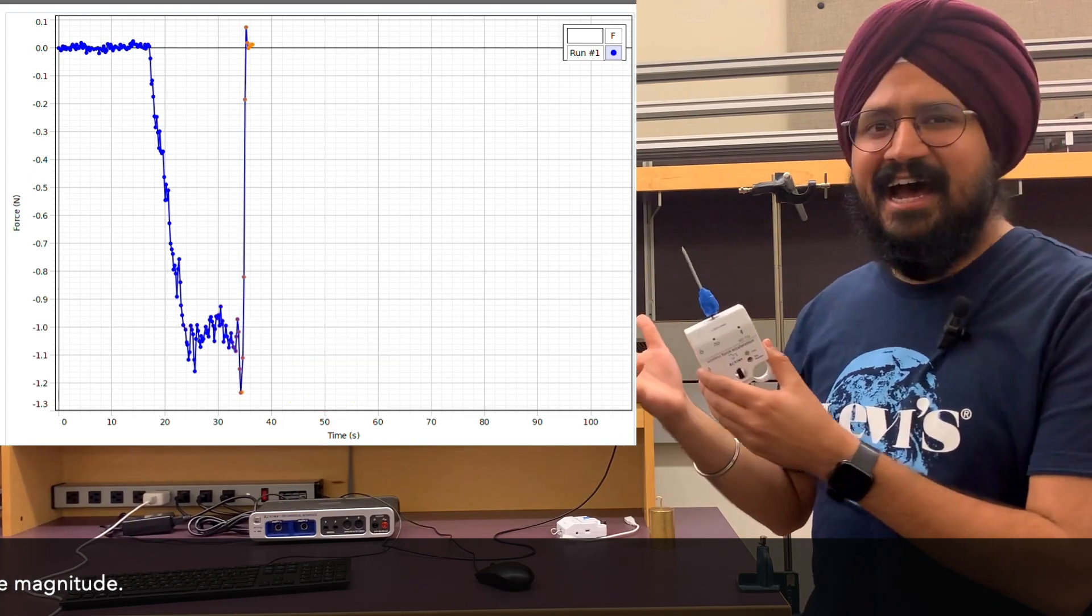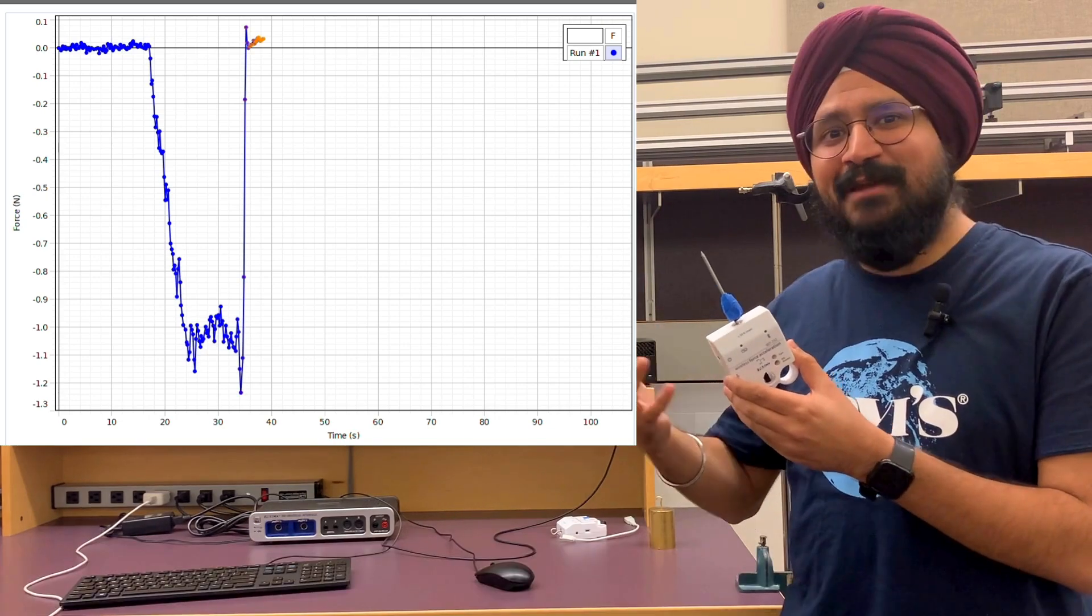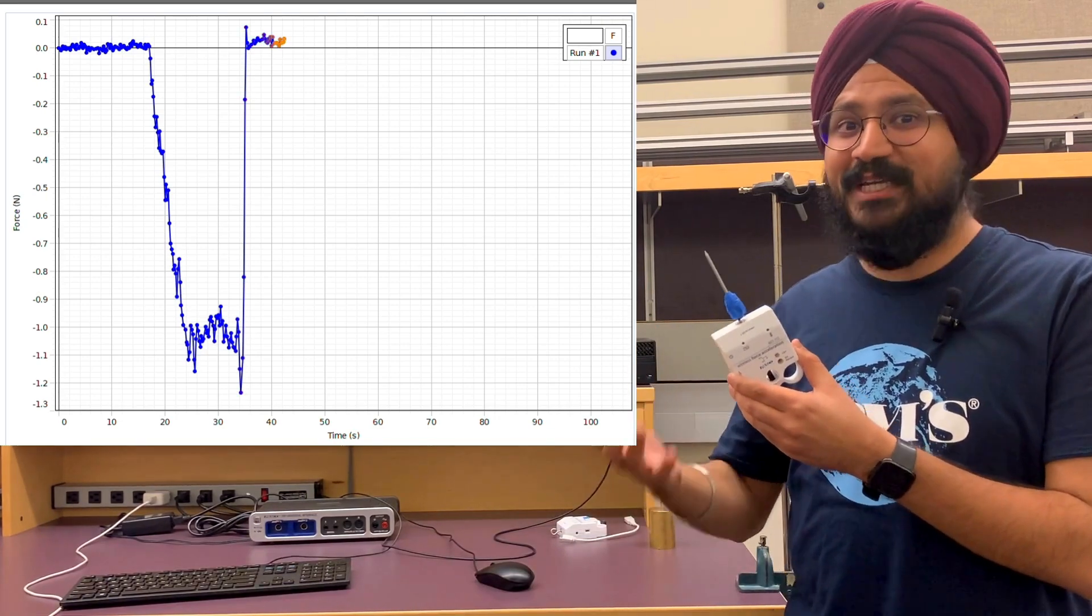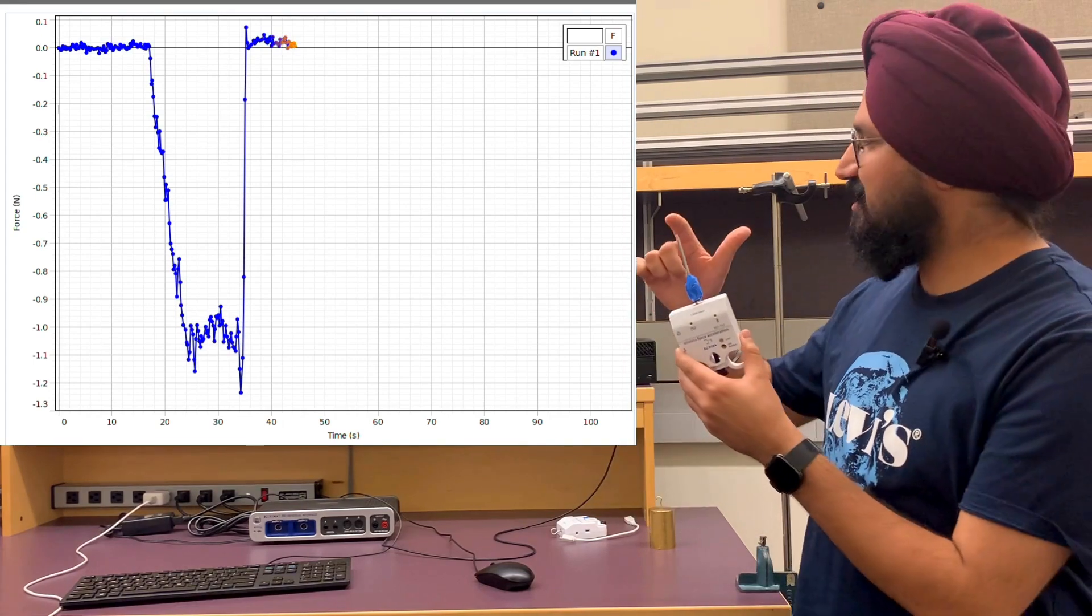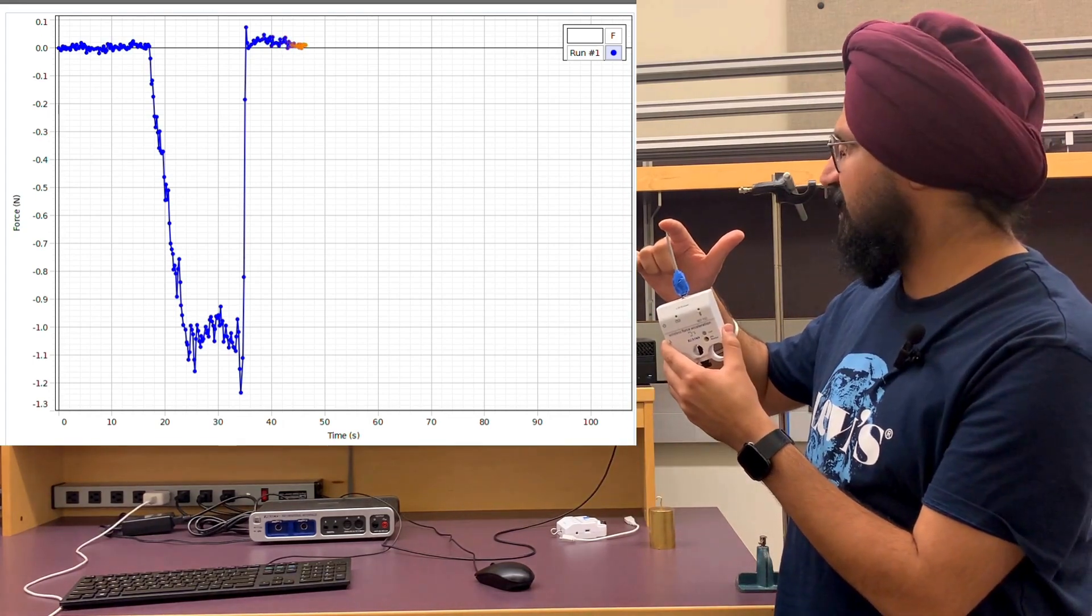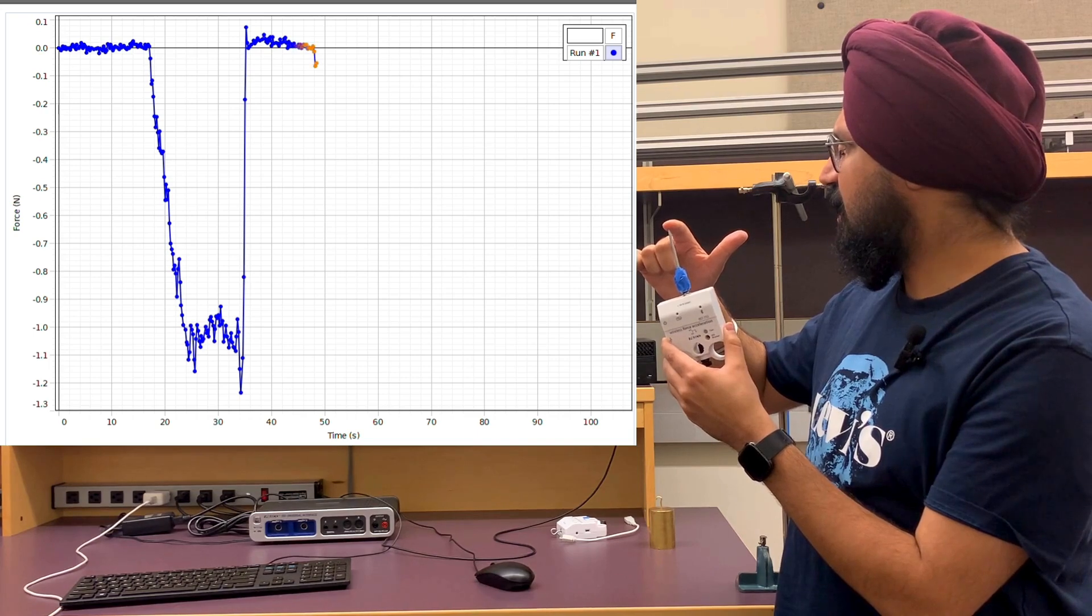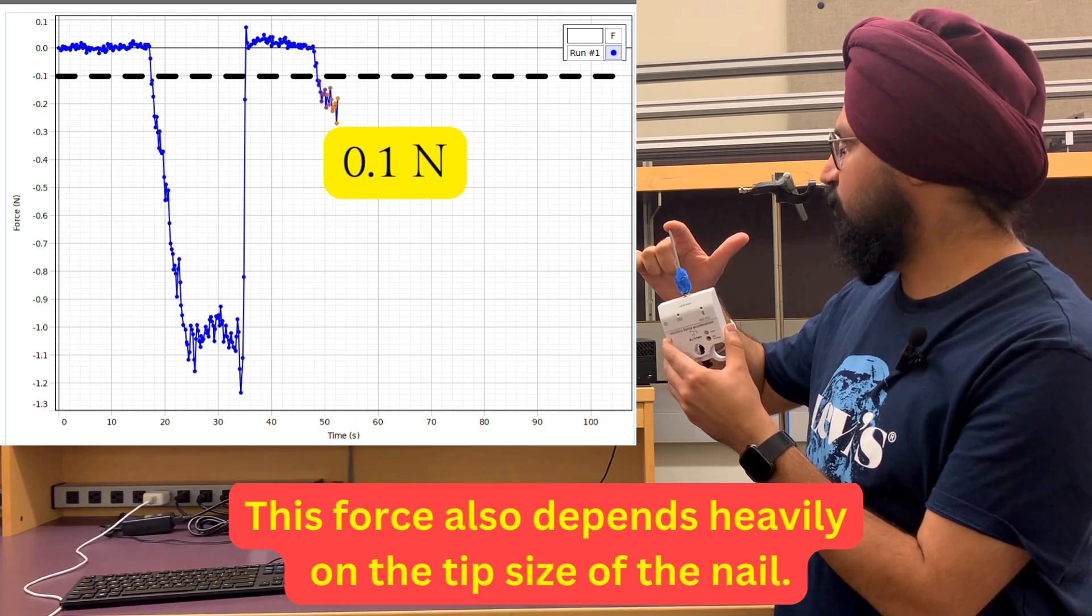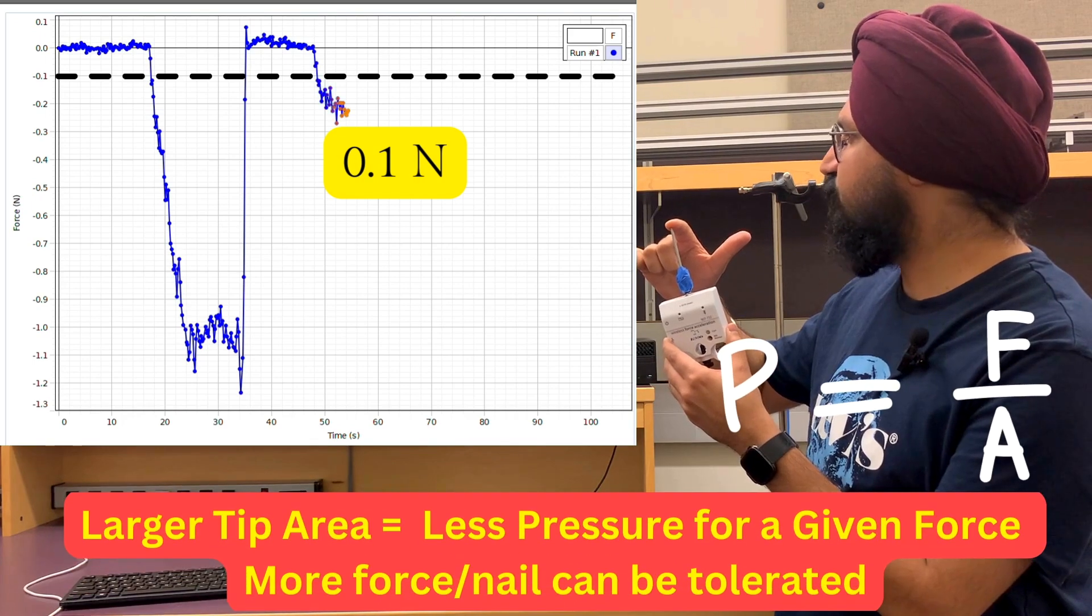I would say around my pain threshold, about 1 newton or so. But then again, I'd rather not sleep at my pain threshold throughout the night. I'd rather be more comfortable. So, let's see. As I increase the force again, I would say anywhere beyond the 0.1 newton zone I can start to feel it.